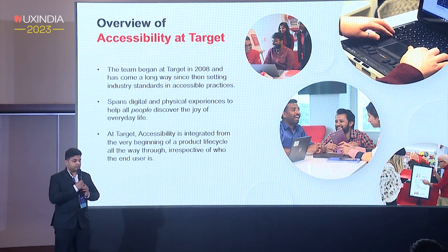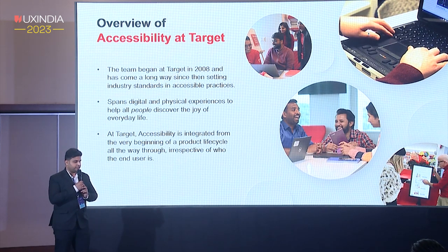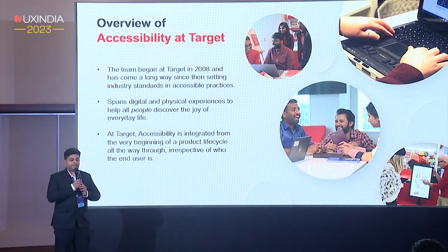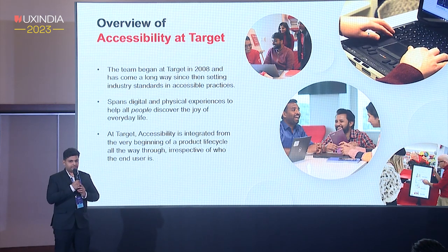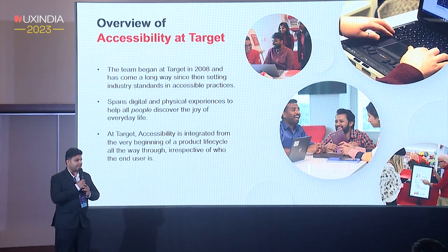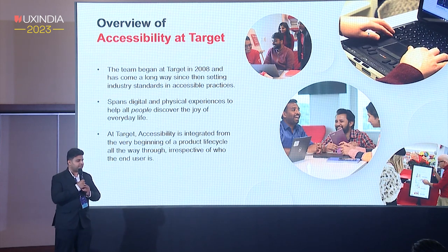Accessibility is simply a measure of how easily a person can participate in an activity. We do it in both physical and digital environments to provide equal access and opportunities, promote social inclusion, and the accessibility guidelines promote coding best practices, help in SEO and SEM, and incorporate universal design principles. The accessibility team at Target was set up in 2008 and we have come a long way. Accessibility is included in every phase of the software development lifecycle — conceptual phase, design, and development — irrespective of whoever the end user is.